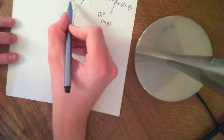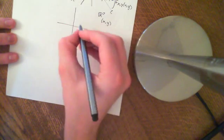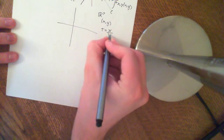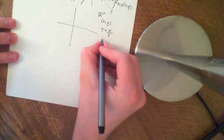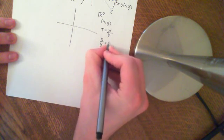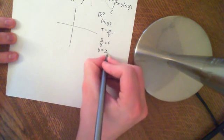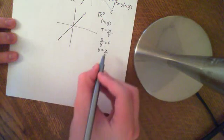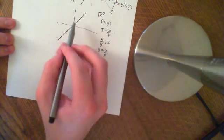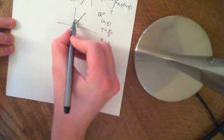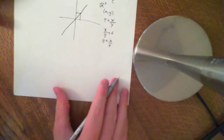We want to know what is the event that T is less than or equal to little t in this R2 space. We know that big T equals big X over big Y. So if a t value is fixed, then little x over little y equals t, and that corresponds to the line y equals x over t. So all points along a line like that have a fixed value of t.